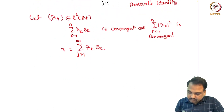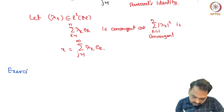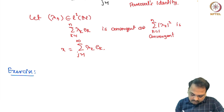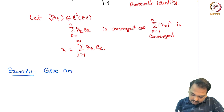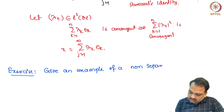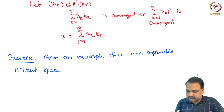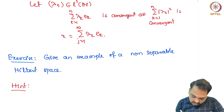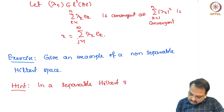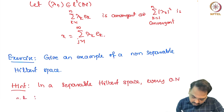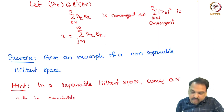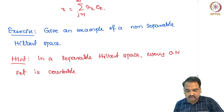Now the question is: give an example of a non-separable Hilbert space. In a separable Hilbert space every orthonormal set is countable. Using this fact we can construct an example of a non-separable Hilbert space.